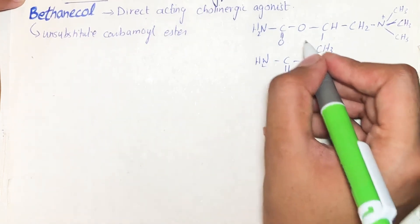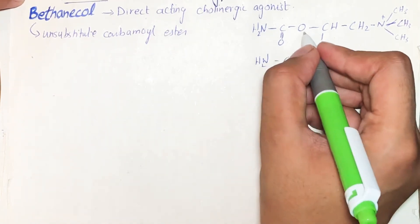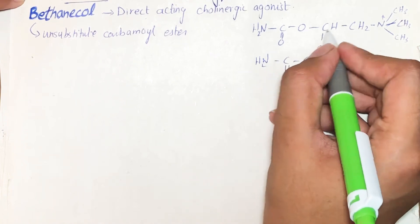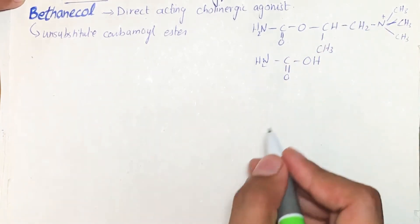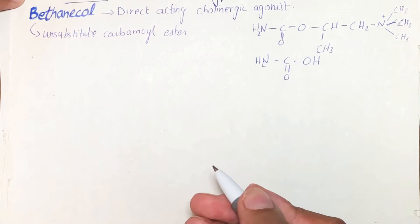This hydroxyl group is replaced by oxygen and an alkyl group, which is called esterification of carbamic acid.